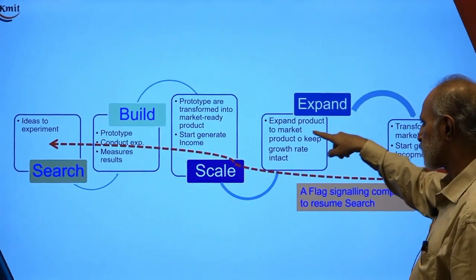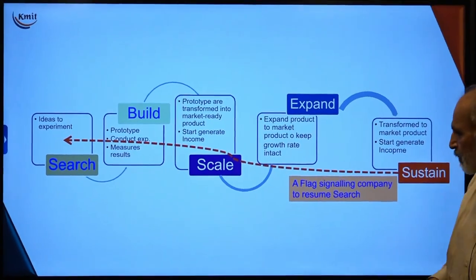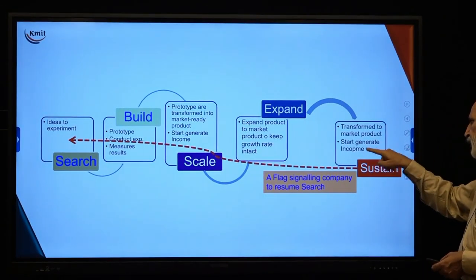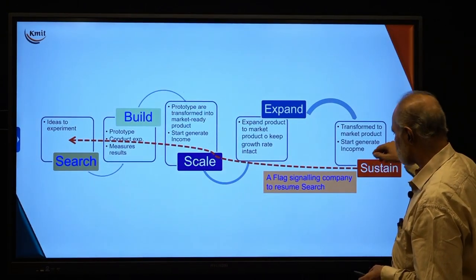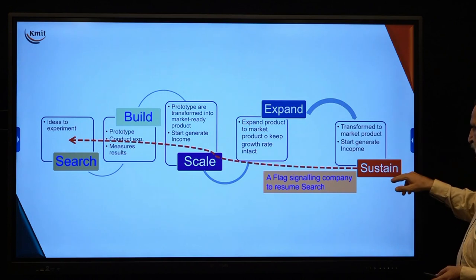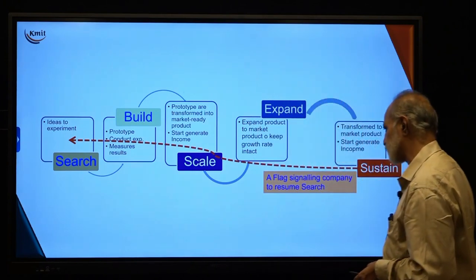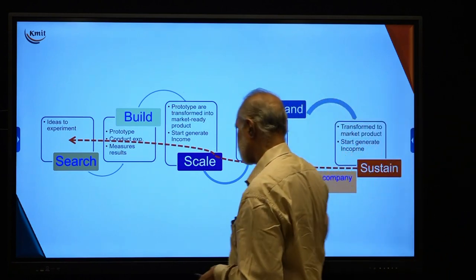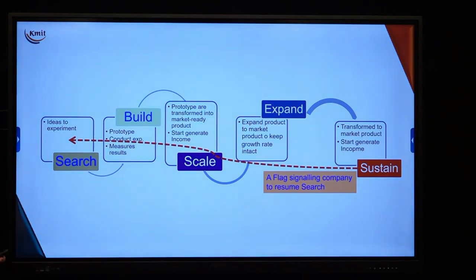Then I expand the product market to keep the growth rate, generating monetary benefit and expanding the market. From expansion, I sustain — transforming the market product and generating complete income. If feedback comes, whether positive or negative, I can go from sustaining back to the search phase to research again. The sustained stage is actually a flag signaling the company to resume the search. These are the five phases of innovation.